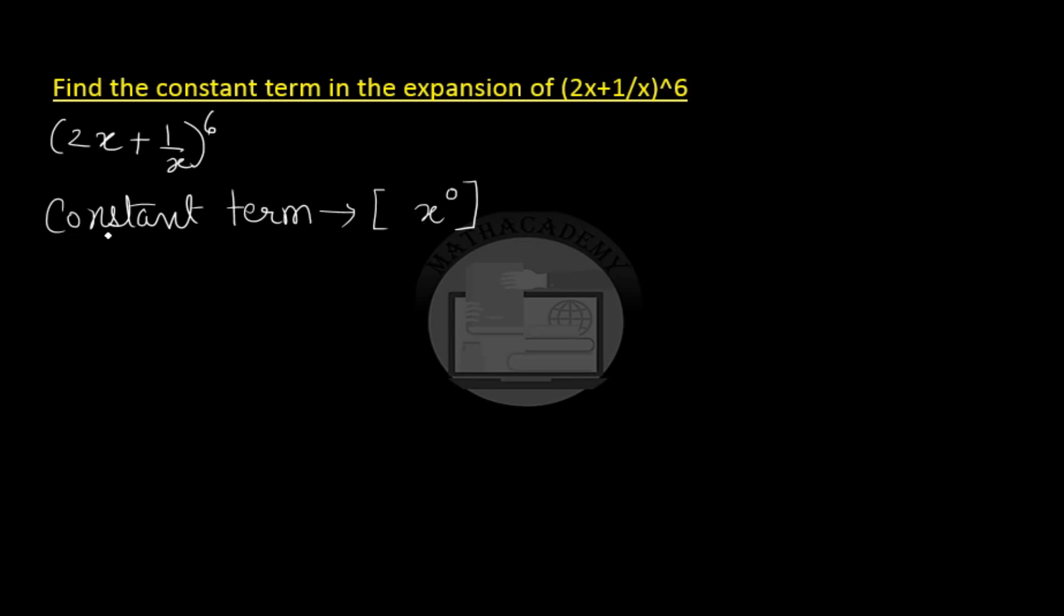Now in my previous video I have told how to find the r plus 1th or the general term in any binomial expansion. So if we have an expansion x plus y to the power of n, then the r plus 1th term is given by n choose r, x to the power n minus r, and y to the power of r. x is the first term and y is the second term.